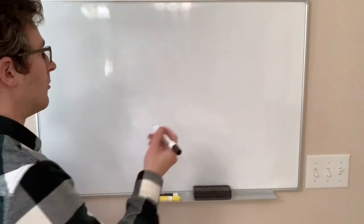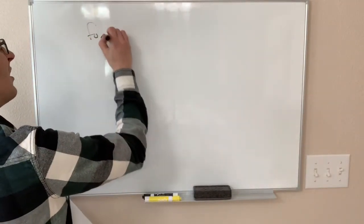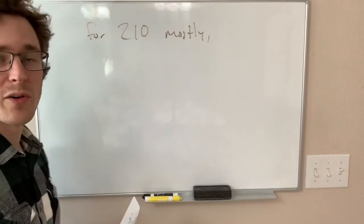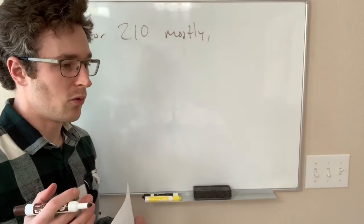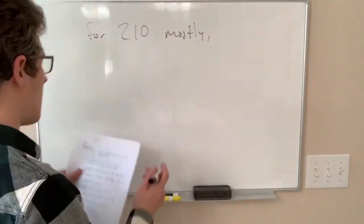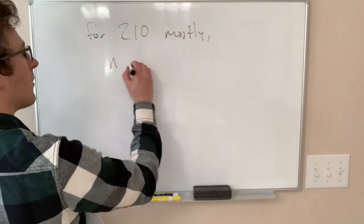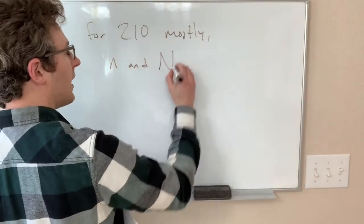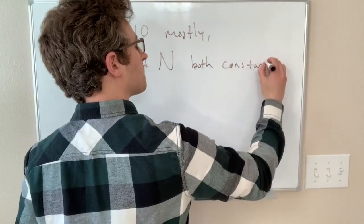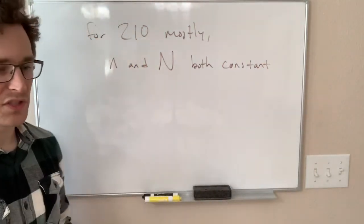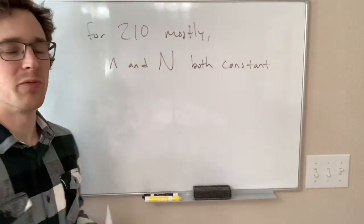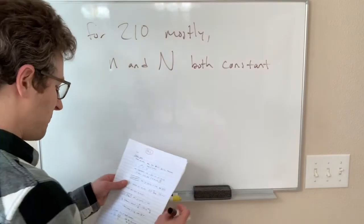Lastly, for most of the stuff we're doing in 210, we are going to have our systems be fixed with regard to the number of particles in them. We are not going to be allowing particles to enter or leave our ideal gas system, which means N and n, number of moles or number of particles, are both constant. So, if we start out with 10 moles of stuff, we're going to end up with 10 moles of stuff. We're not interested in flow of particles in or out of our system the way we might be in some other classes.